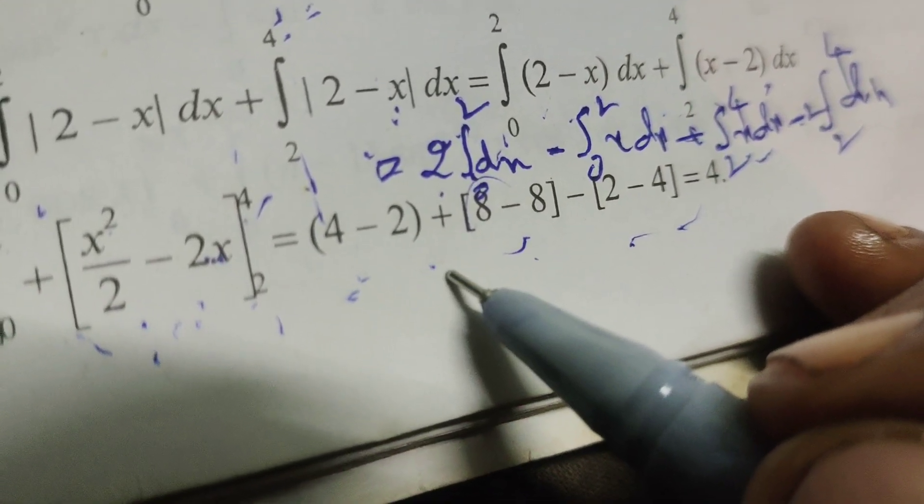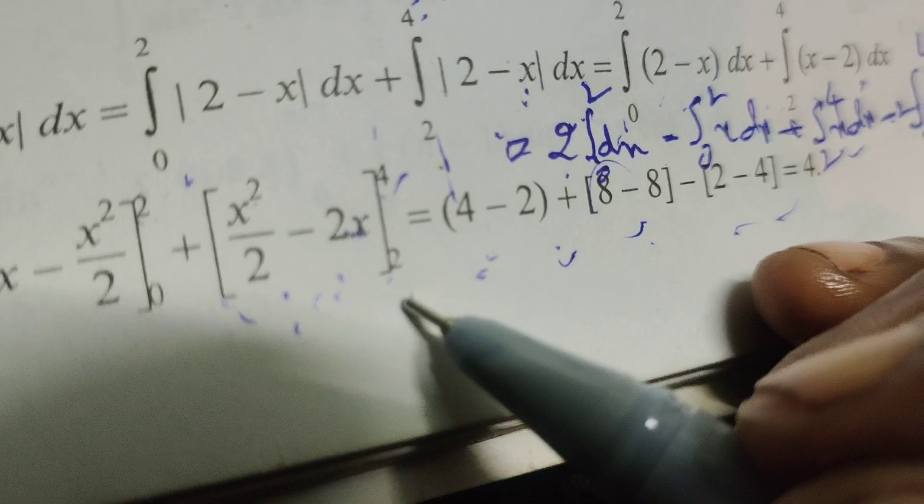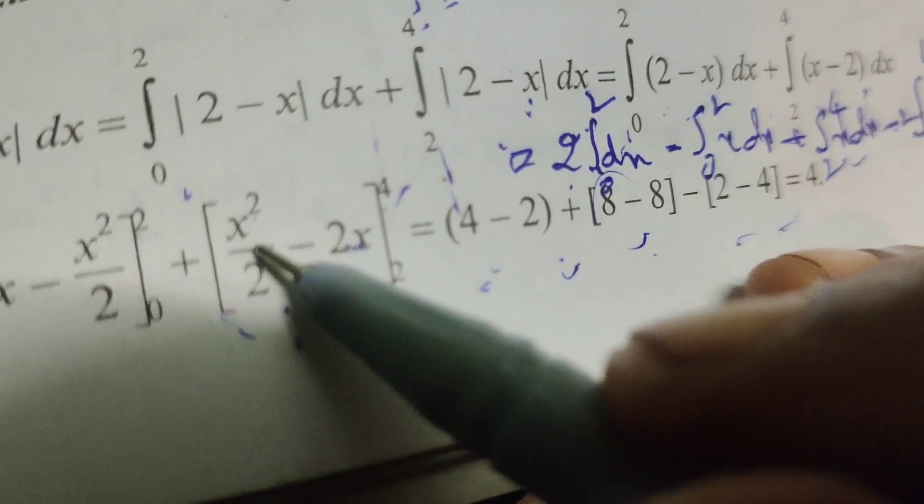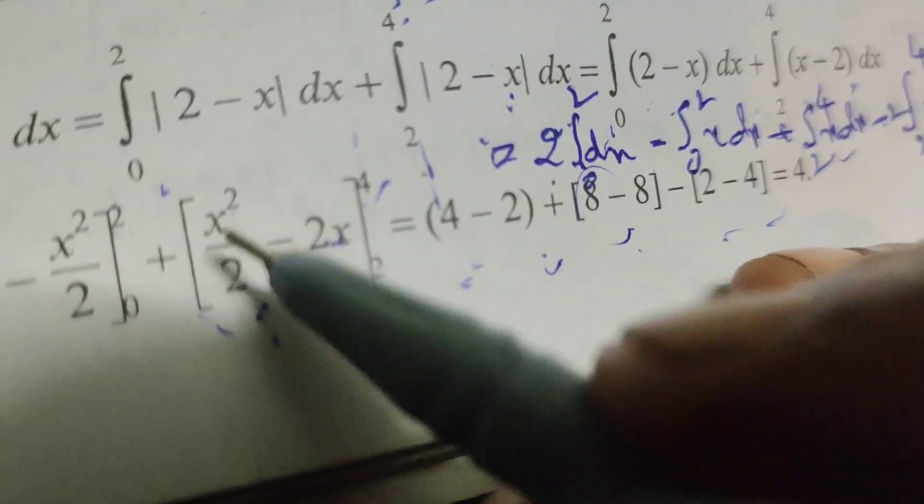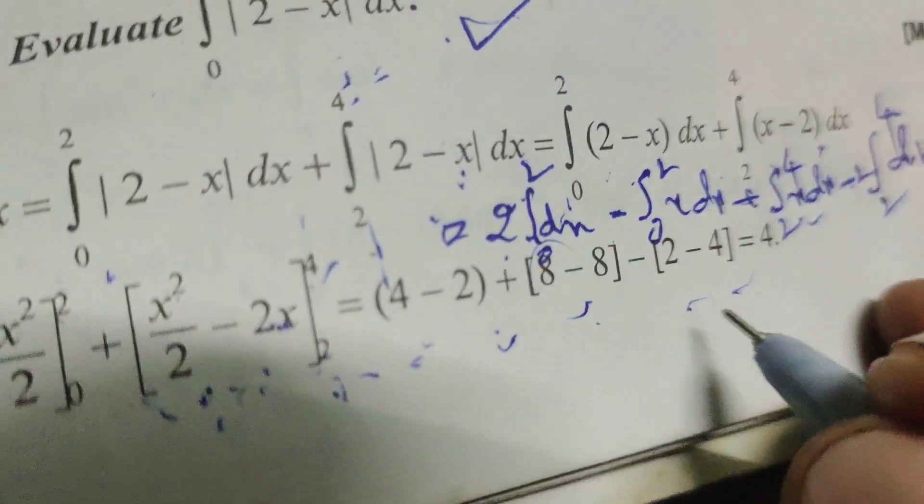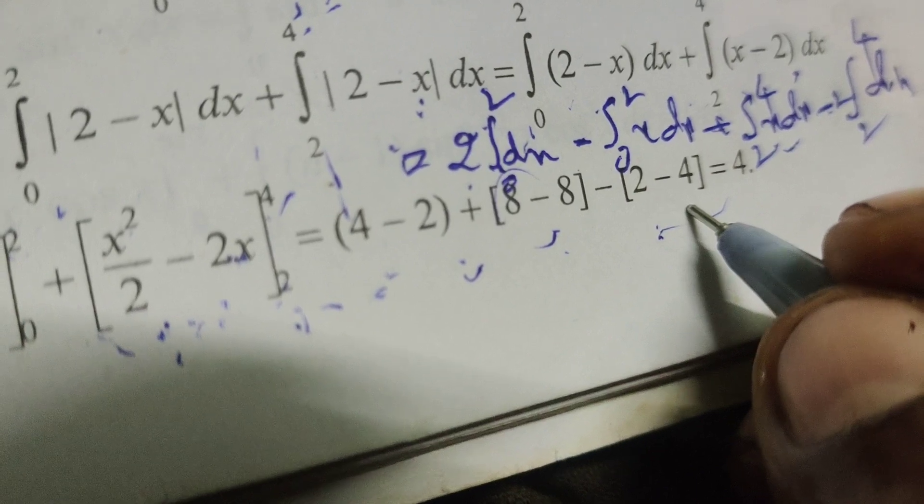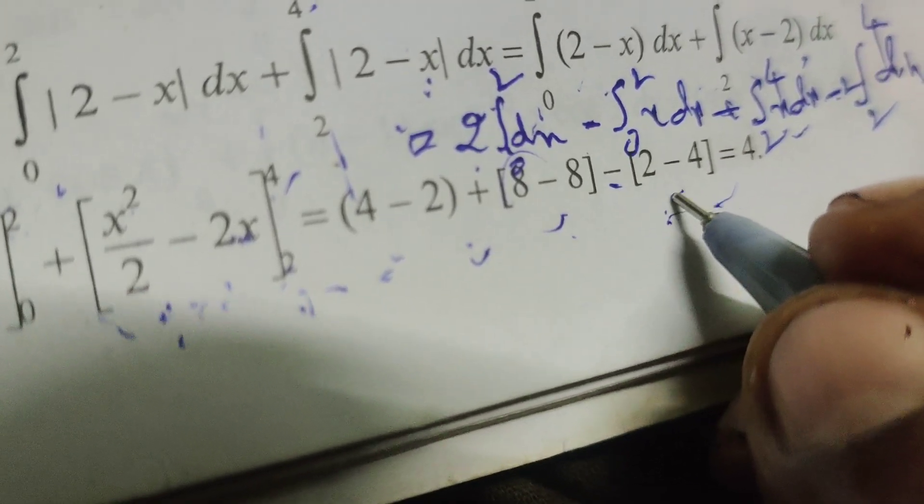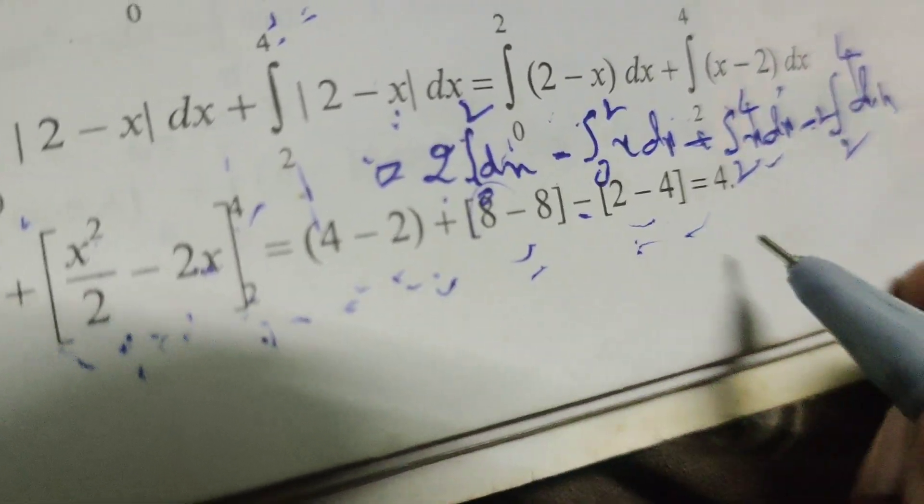At x=2 for the second bracket: 4/2 - 4 = 2 - 4 = -2. So we have 2 plus 0 minus (-2), which equals 2 plus 2 = 4.